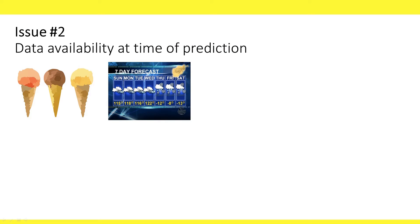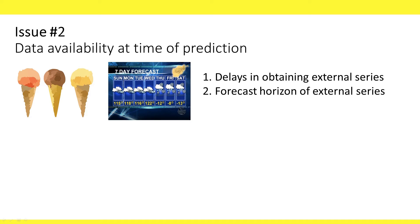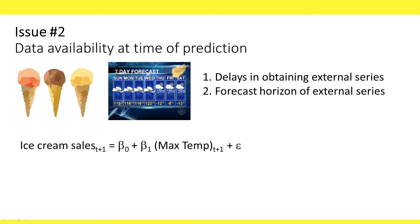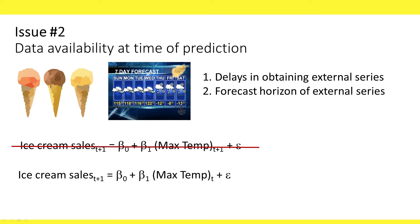The second issue is another aspect of data availability — specifically, it relates to delays in obtaining the external series and the needed forecast horizon. For example, suppose we want to forecast daily ice cream sales and would like to include the daily maximum temperature as an external predictor. Ideally, for sales on day t plus 1, we would want the maximum temperature on day t plus 1. However, that information will not be available at time t. Therefore, we can use a lagged version of maximum temperature, as mentioned in issue one.